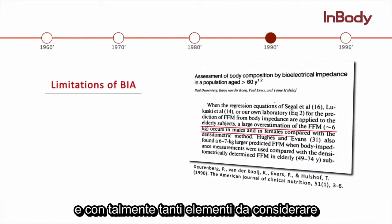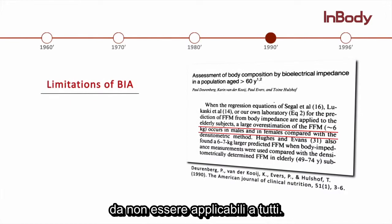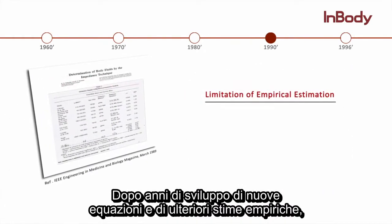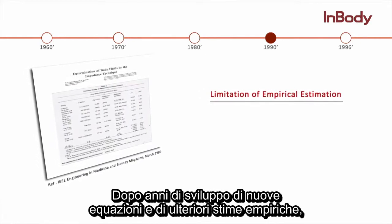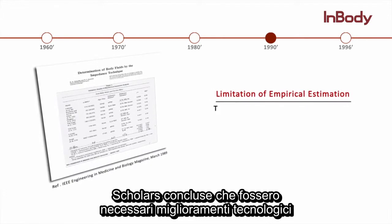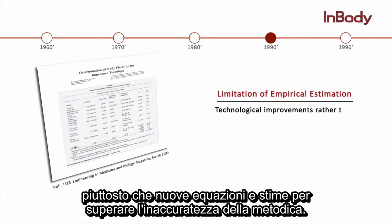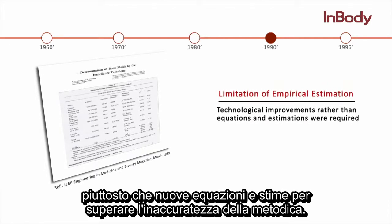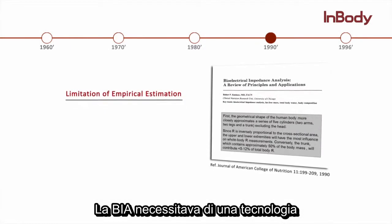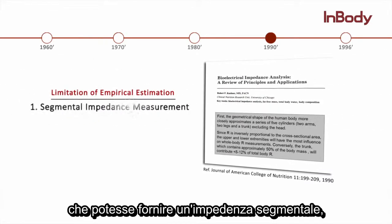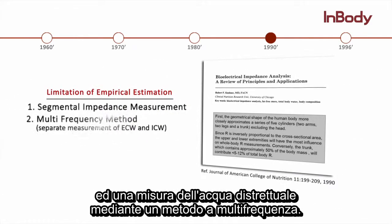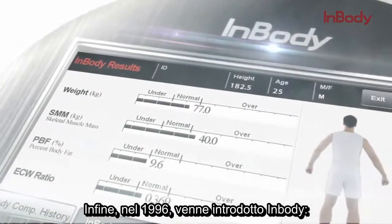With so many additional factors to account for, no equations were applicable to all. After years of developing additional equations and incorporating empirical estimations, scholars concluded that technological improvements — rather than equations and estimations — were required to overcome the inaccuracy. BIA required technology that could provide segmental impedance and body water compartment measurements using a multi-frequency method.